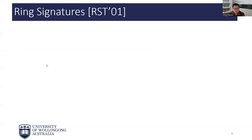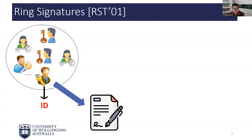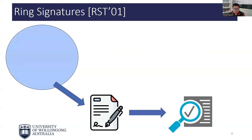Let us first consider the setting of ring signatures, one of the most well-known private signature systems. We have a group of users, and each user has a secret signing key which can be used to sign messages in an anonymous manner. A signer with personal identifiable information ID can issue a signature on any message, in a way such that the signature verifiers can be convinced that a signature was from someone in the group, but cannot determine who is the actual signer. Ring signatures provide absolute privacy for signers.